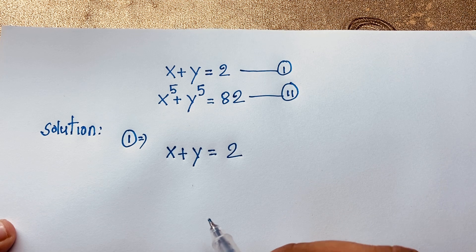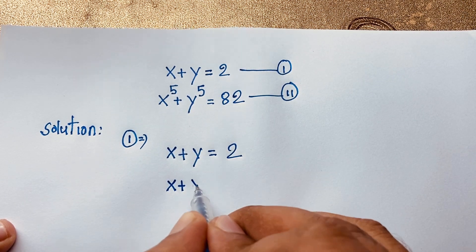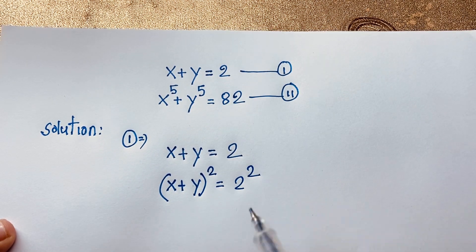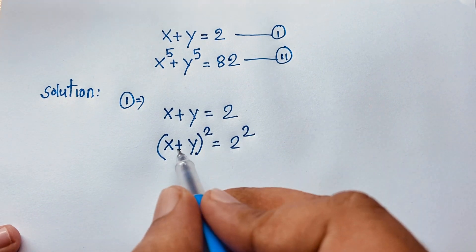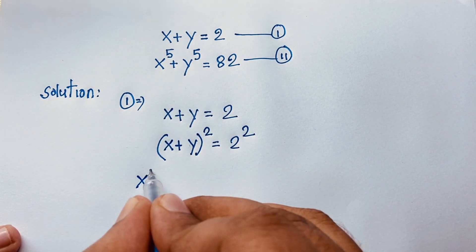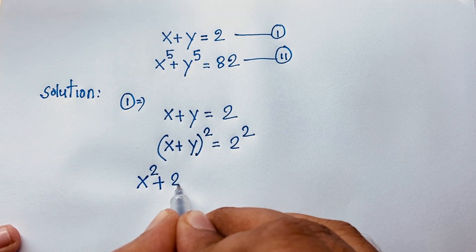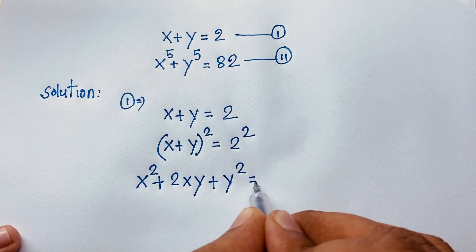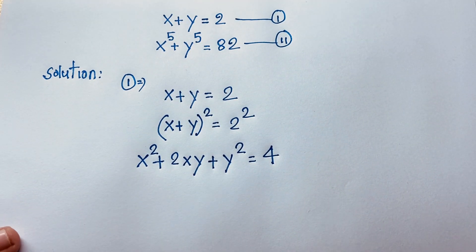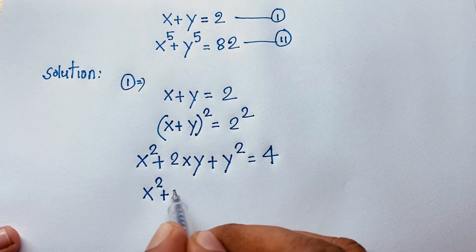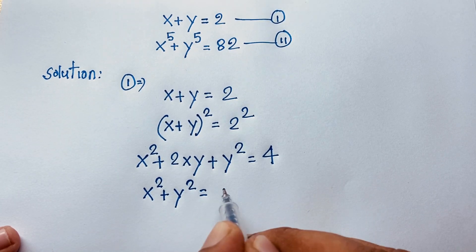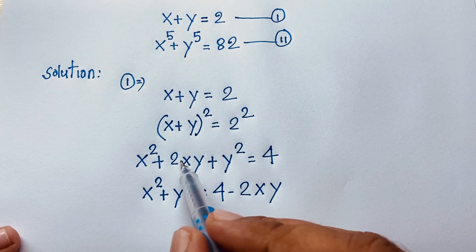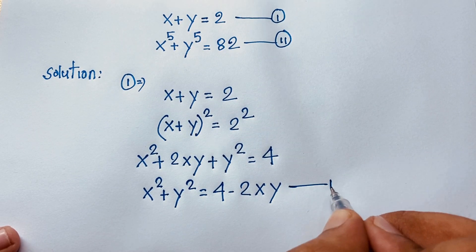Now I use both sides whole square, so it will be x plus y whole to the power 2 is equal to 2 to the power 2. We know that (a + b)² = a² + 2ab + b², so x² + 2xy + y² is equal to 4. Then you can see here, x² plus y² is equal to 4 minus 2xy. This is our third equation.